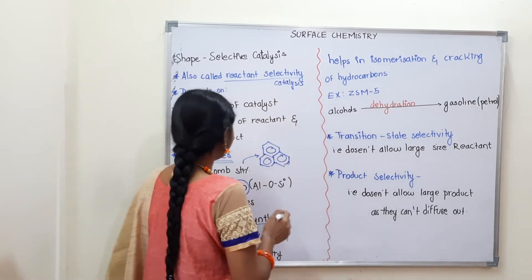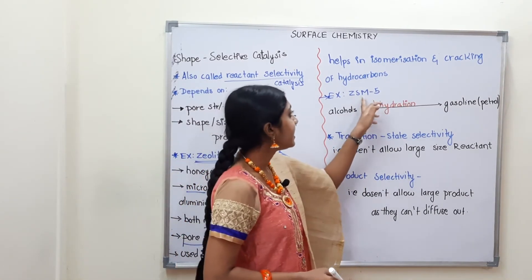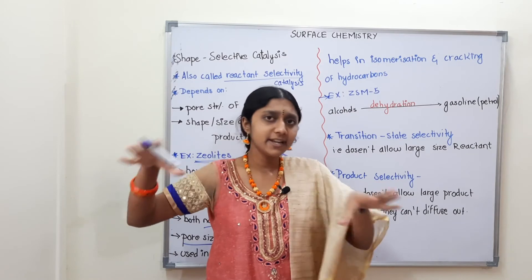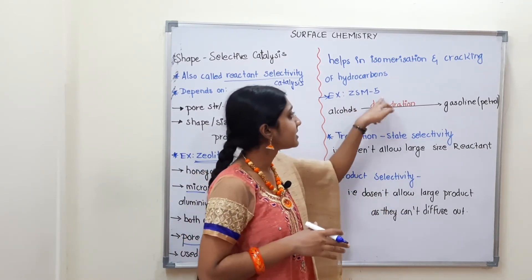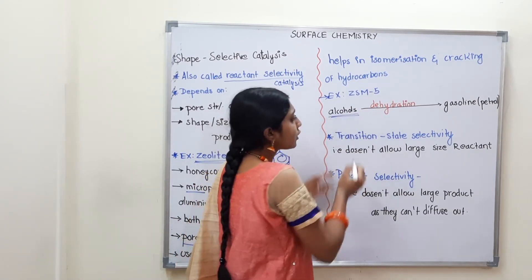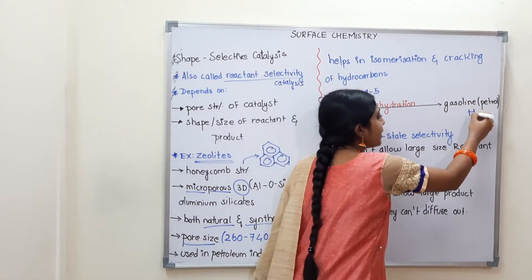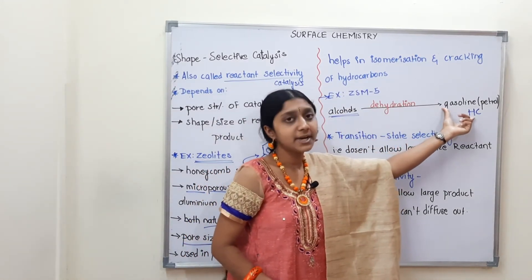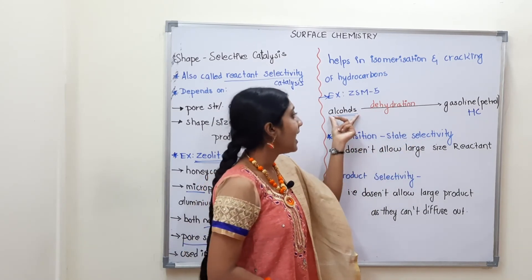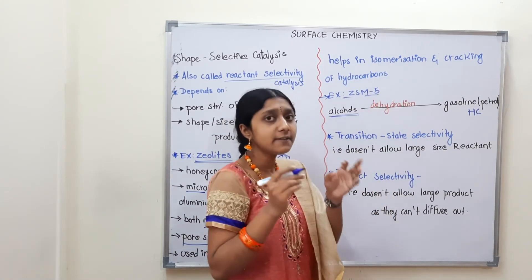The best example of these zeolites is ZSM5. Shape selective catalyst is zeolite, and ZSM5 is one important type. How do we use ZSM5? Alcohols are converted to gasoline, which is a hydrocarbon, through a dehydration process. So ZSM5 is a shape selective zeolite that converts alcohol to petrol.